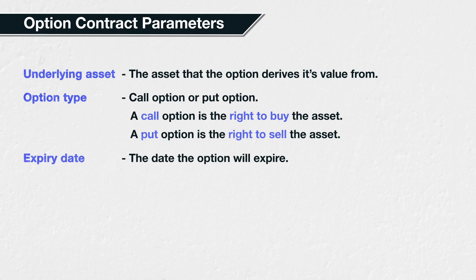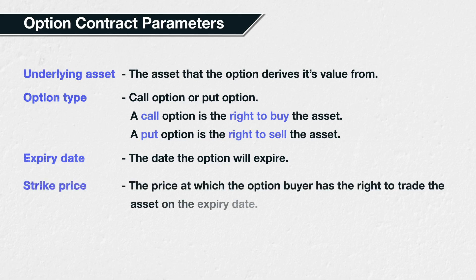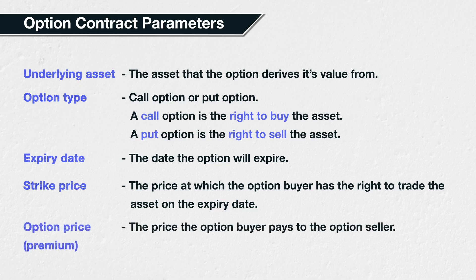Exercising an option means the buyer exercises their right to buy or sell the asset. The fourth parameter is the strike price — the price at which the buyer has the right to trade the asset on the expiry date. For a call option the buyer has the right to buy the asset at the strike price, and for a put option the buyer has the right to sell the asset at the strike price. The fifth parameter is the option price, also known as the option premium — this is the price the buyer pays to the seller to purchase the option.